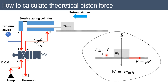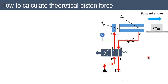Let us look at the free body diagram. Weight W = mg always acts vertically downward. The normal reaction R is always perpendicular to the surface. If this is the direction of motion, the frictional force acts in the opposite direction. We need to calculate this theoretical force and the frictional forces.